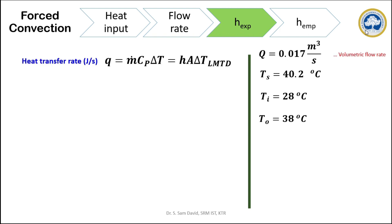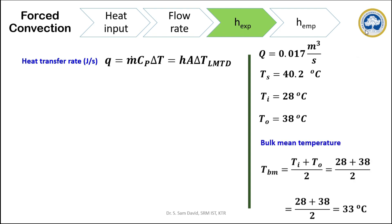With these values we can calculate the experimental heat transfer coefficient. In the forced convection process, the heat transfer rate is calculated by the corresponding equation. Although the applied voltage and current heat the rod, the amount of heat transferred to the air depends on the mass flow rate of the air. Hence, instead of using V × I for heat rate, we equate m·Cp·ΔT with h·A·ΔT. For this calculation we need the properties of air, taken from the data sheet at the bulk mean temperature. The bulk mean temperature is calculated by averaging the inlet and outlet air temperatures, Ti and To.